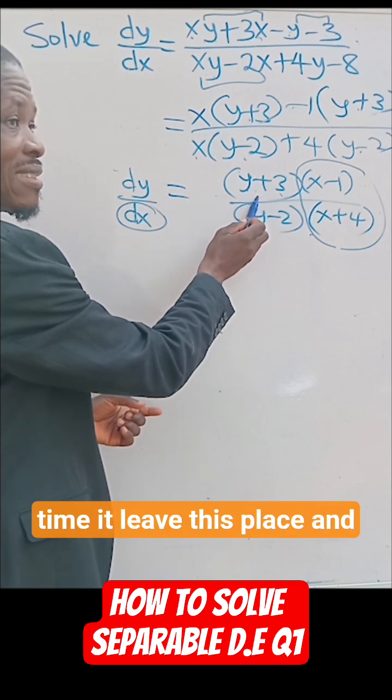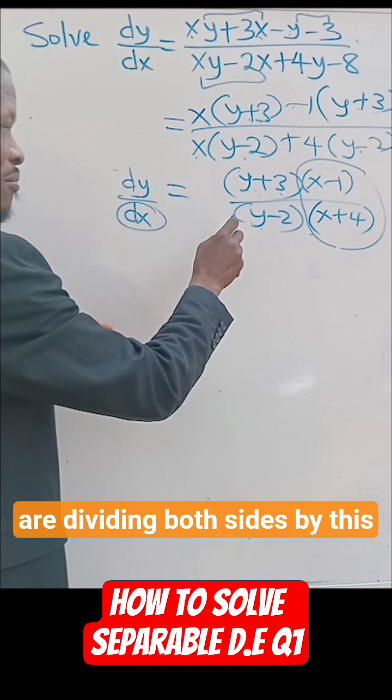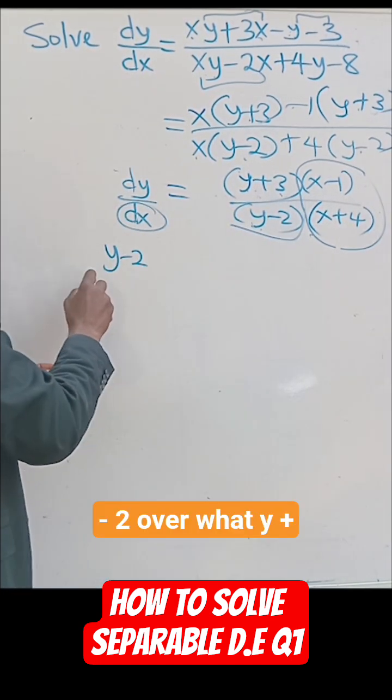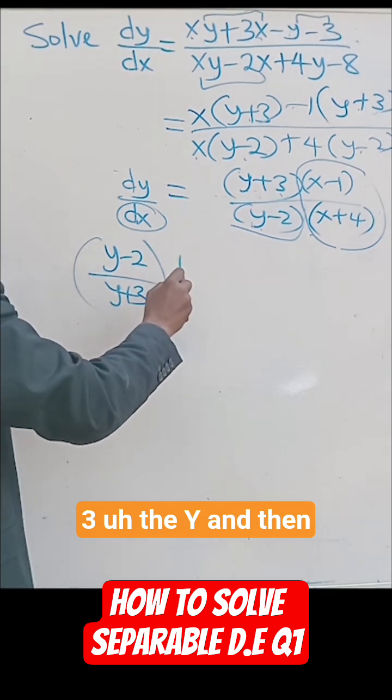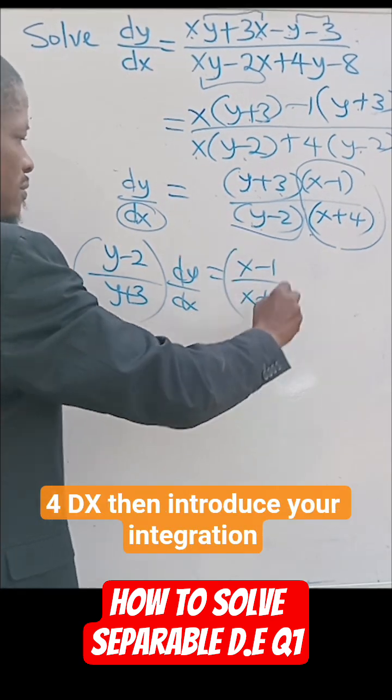By the time it leaves this place and goes to the other side, what we're doing is dividing both sides by this fraction. So it's going to be x minus 2 over y plus 3 dy, and then x minus 1 over x plus 4 dx.